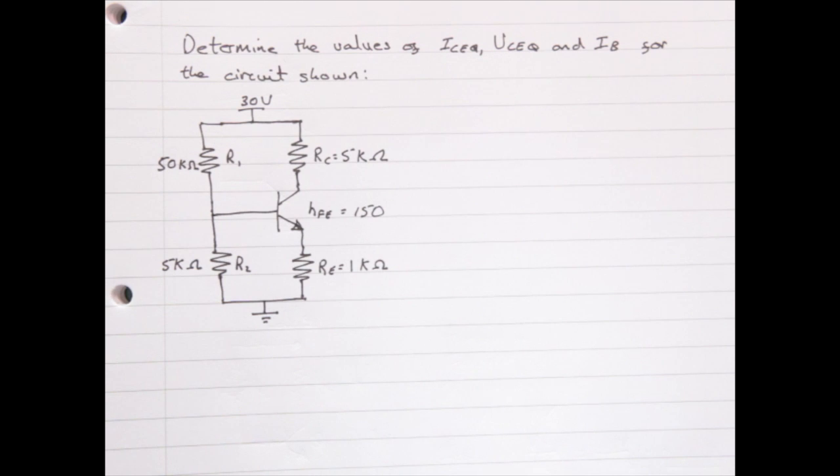Well, the Q in the ICEQ and VCEQ refers to the quiescent, or rest values, of the collector current going through the collector emitter and the voltage across the collector emitter. When we say quiescent, we're referring to when there is no input signal, and the voltages around the circuit are at a specific DC value.